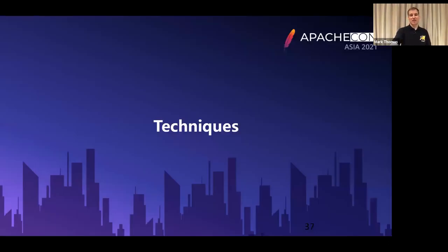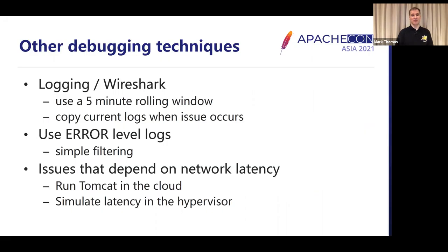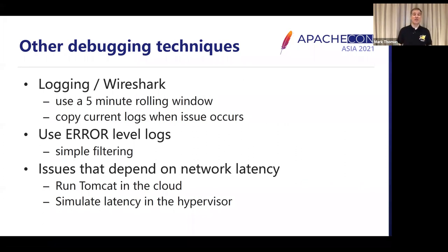There are a couple of techniques I use when debugging that I haven't mentioned so far. First, whether it's logging or Wireshark, anything that generates large volumes of output — it's a really good idea to use a rolling window. I typically aim for a five-minute rolling window. The idea is you set the system up so that when the error occurs, you copy the current logs. That way you can leave the system running for days if necessary, but when the error occurs, you've got that automatic copy of the logs for the relevant five minutes leading up to the error.